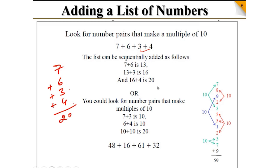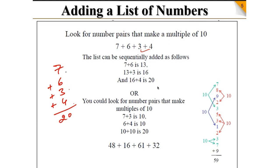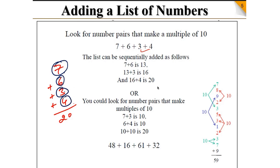Instead of adding 7 plus 6 plus 3 plus 4 straight down, I write 7 — what is the pair of 7? 3. So 7 plus 3 is 10. Now 6 — what is the pair of 6? 4. So 6 plus 4 is also 10. Then 10 plus 10 is 20. That is the answer.